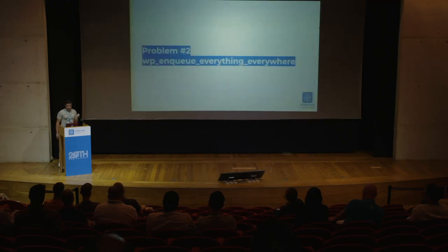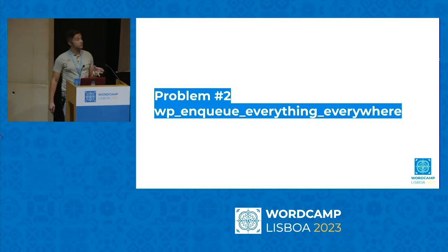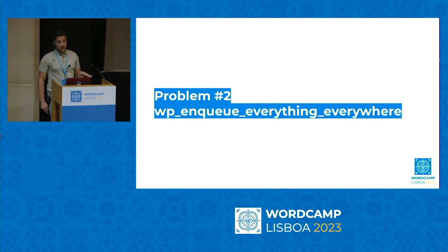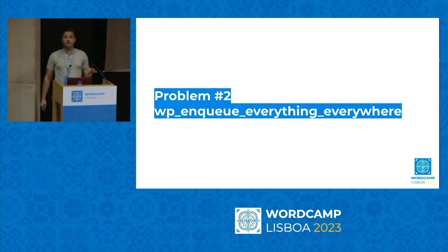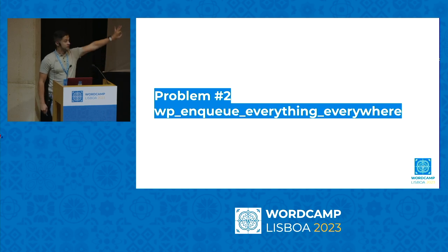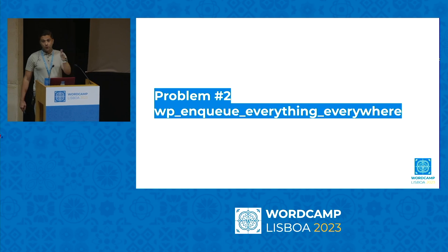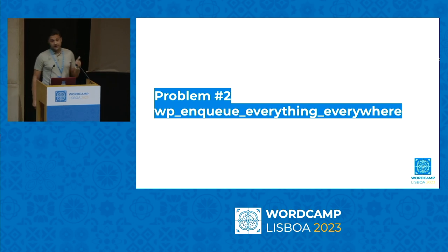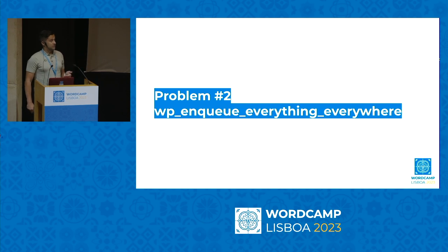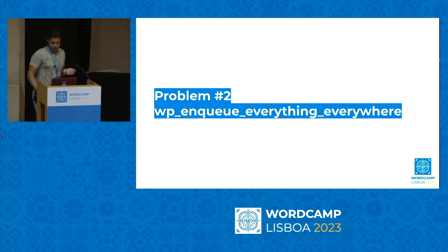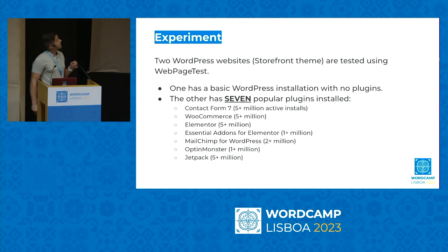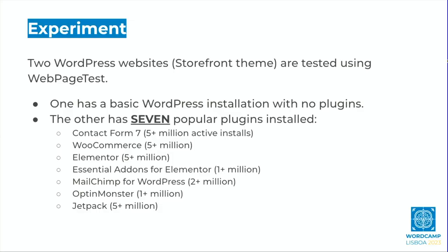The second problem — and this is the one that kills every single WordPress website I've optimized — is the wp_enqueue family of functions. Countless blog posts say it's as simple as using this function to enqueue your CSS and JavaScript. What it actually does is load that CSS or JavaScript file in every single page of your website — and you never need it on every single page. So I set up an experiment: two WordPress websites tested using WebPageTest — one with a basic WordPress installation, zero plugins, Storefront theme, and one with seven popular plugins.